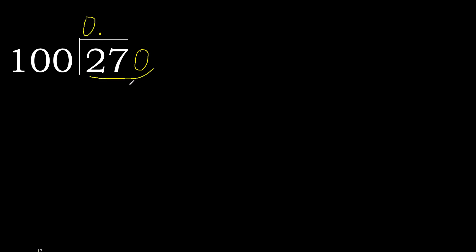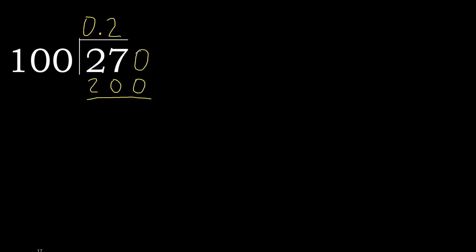270 is not less, therefore with 270. 100 multiplied by which number is nearest to 270 but not greater? 100 multiplied by 3 is 300, which is greater. Multiplied by 2 is 200, which is not greater. Ok, subtract — remainder 70.